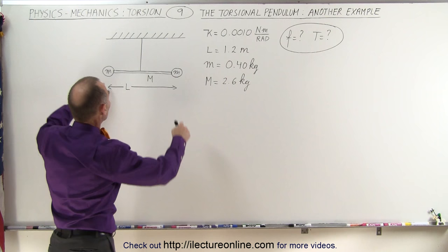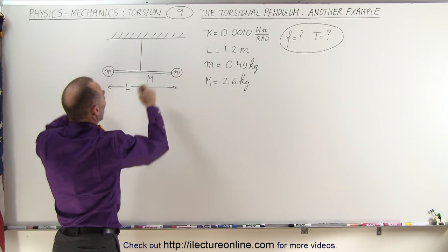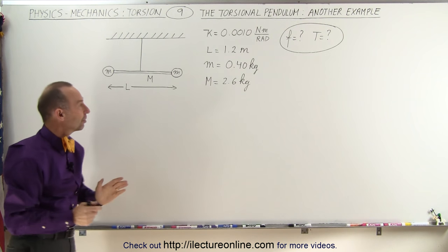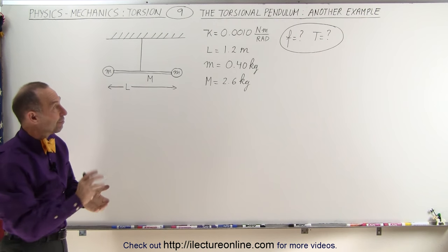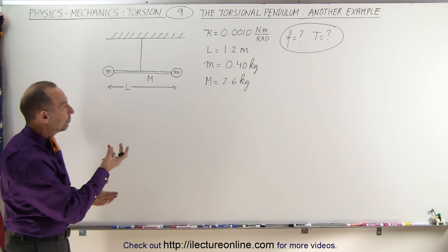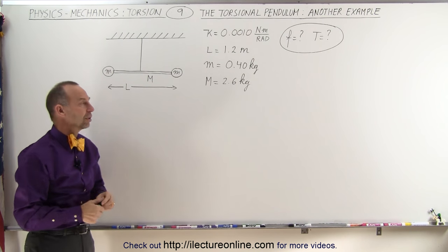The mass of each of those two small masses at the end is 0.4 kilograms. The mass of the rod itself is 2.6 kilograms and the length of the rod is 1.2 meters. We're trying to find the frequency of oscillation back and forth and the period of one oscillation.